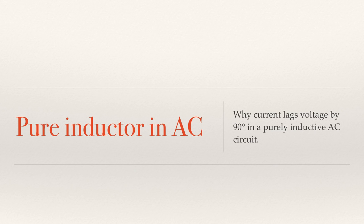In this video, we're going to be discussing why current lags voltage by 90 degrees in a purely inductive AC circuit. In a purely resistive circuit, current and voltage are in phase — they're moving at the same time. But in a purely inductive circuit, the current lags voltage by 90 degrees, and this video is going to show us why.